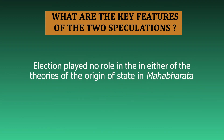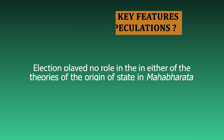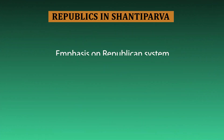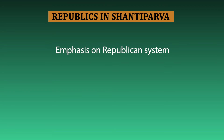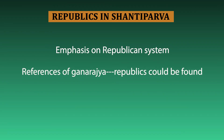Elections played no role in either of the theories of the origin of the state. It is clear from this description that there was emphasis on the monarchical form of government. However, we also find evidence of a republican system, referred to as Gana Rajas.